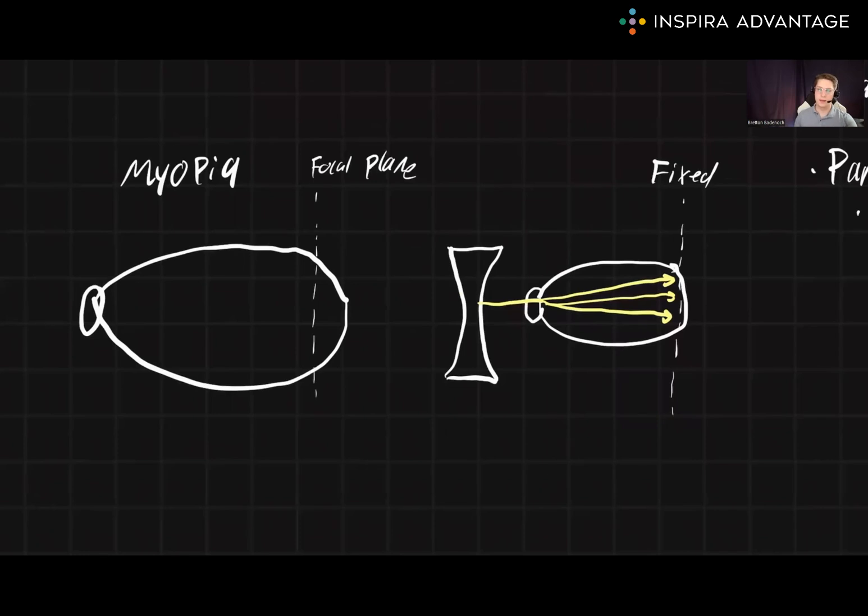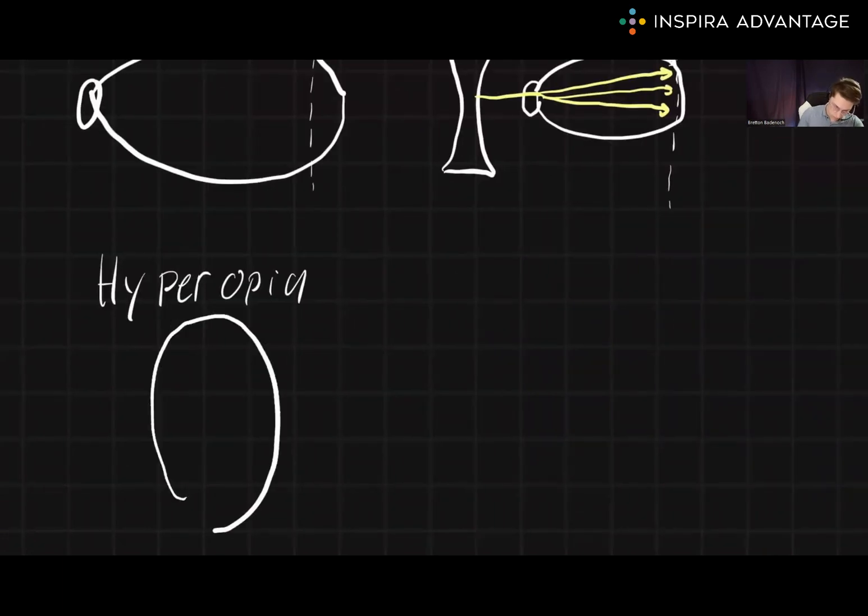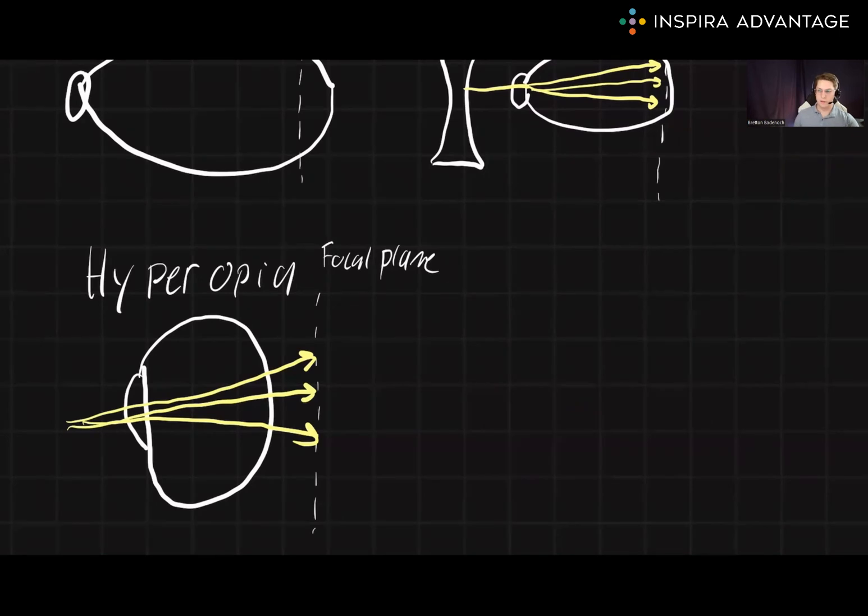Conversely, hyperopia is where you can't see things that are close up. Physically, this is caused by the focal plane being behind the retina. This is usually caused by a squished eye in a taller direction, but less wide. A converging lens can fix this by moving the focal plane forwards onto the retina. Focal planes are usually symbolized like this.